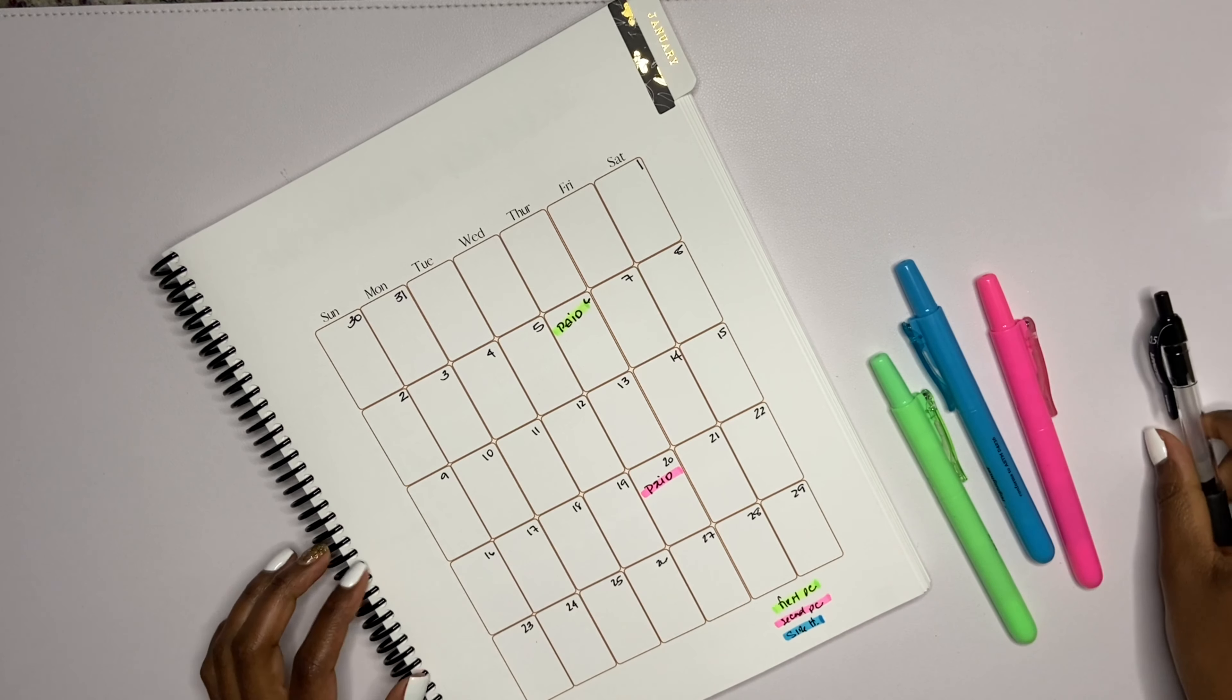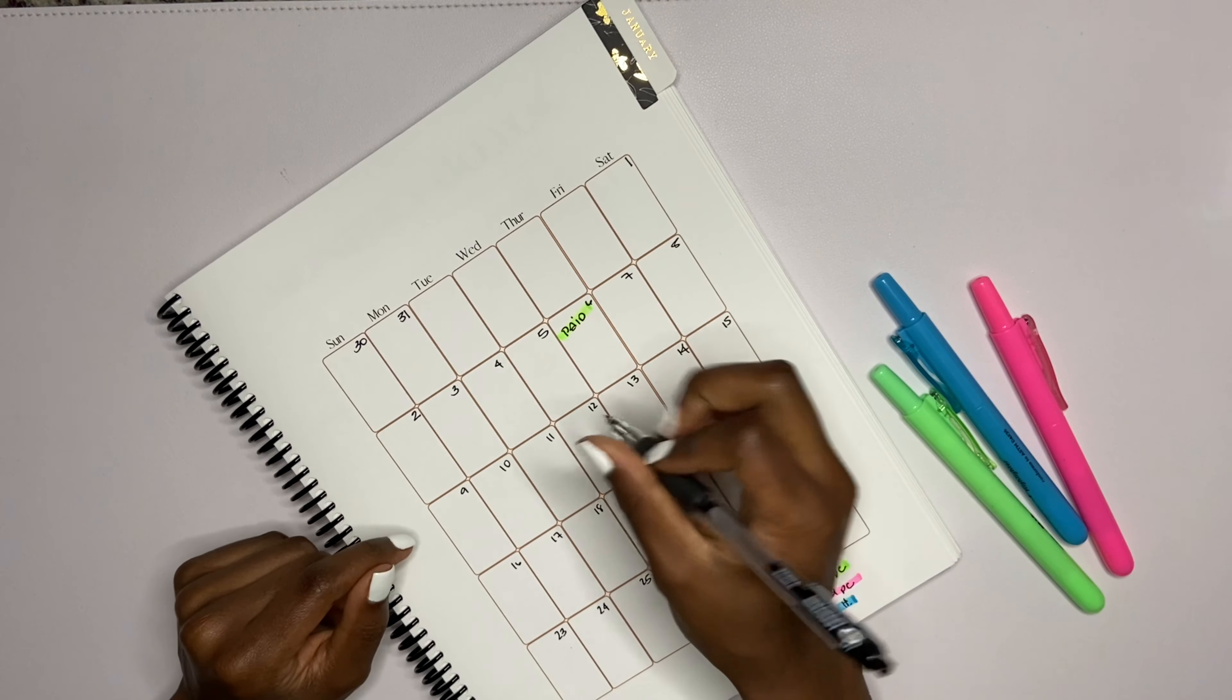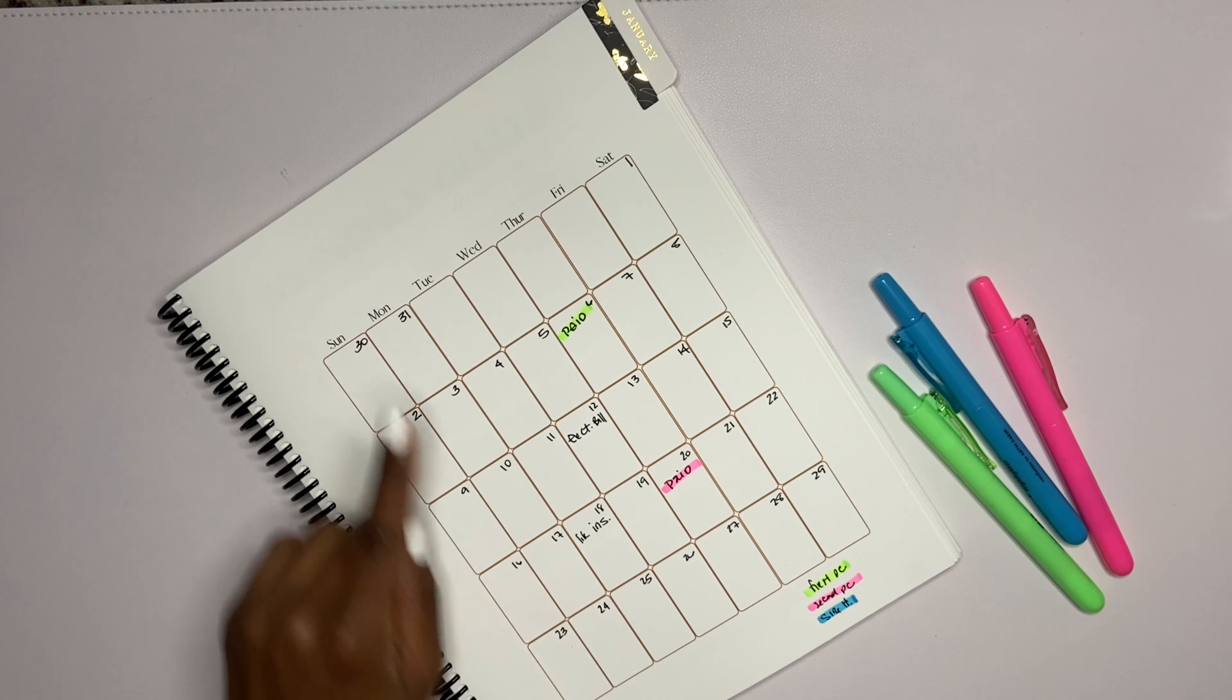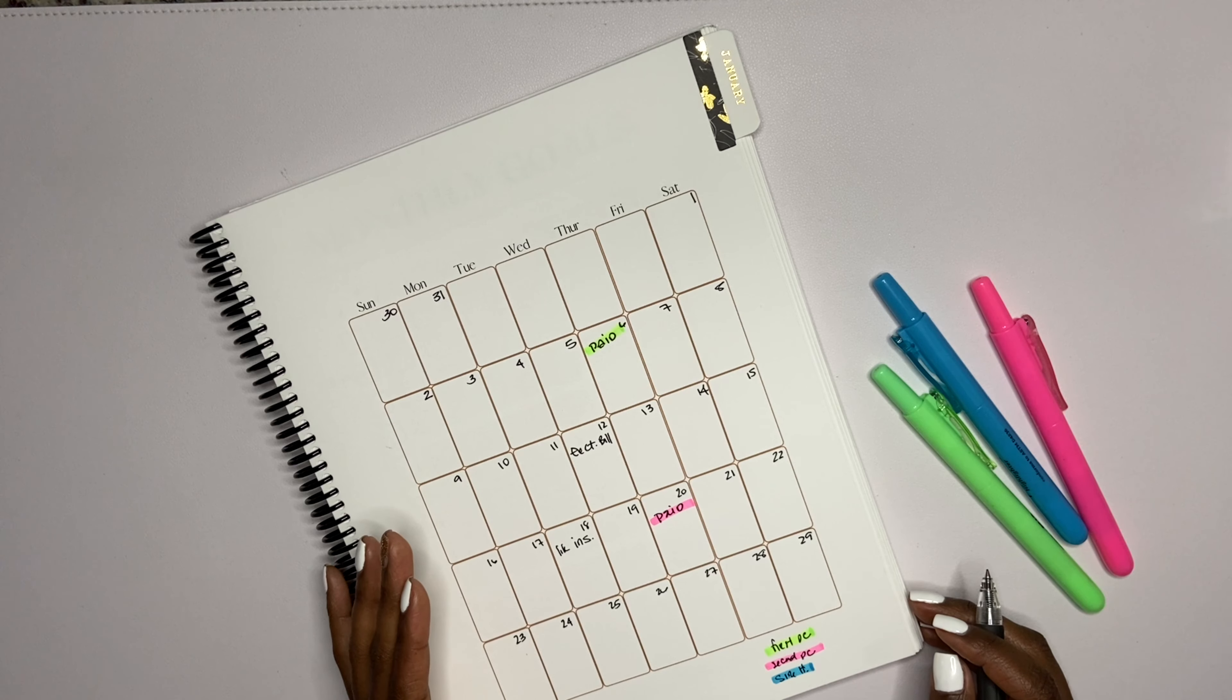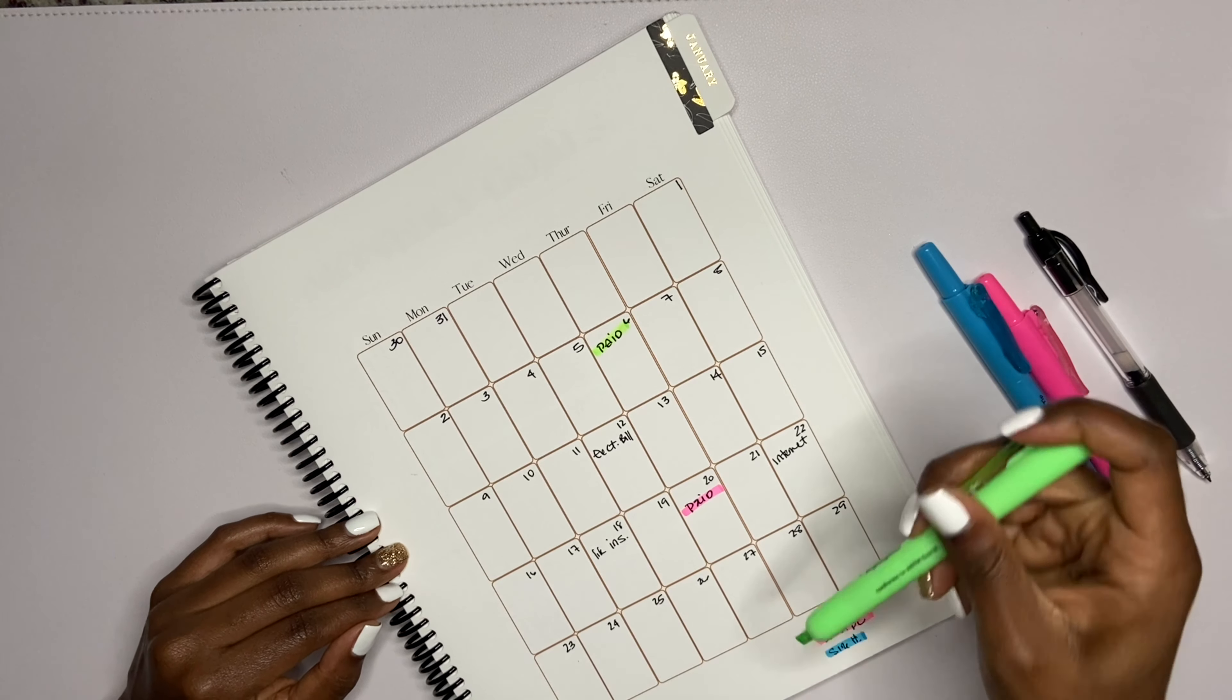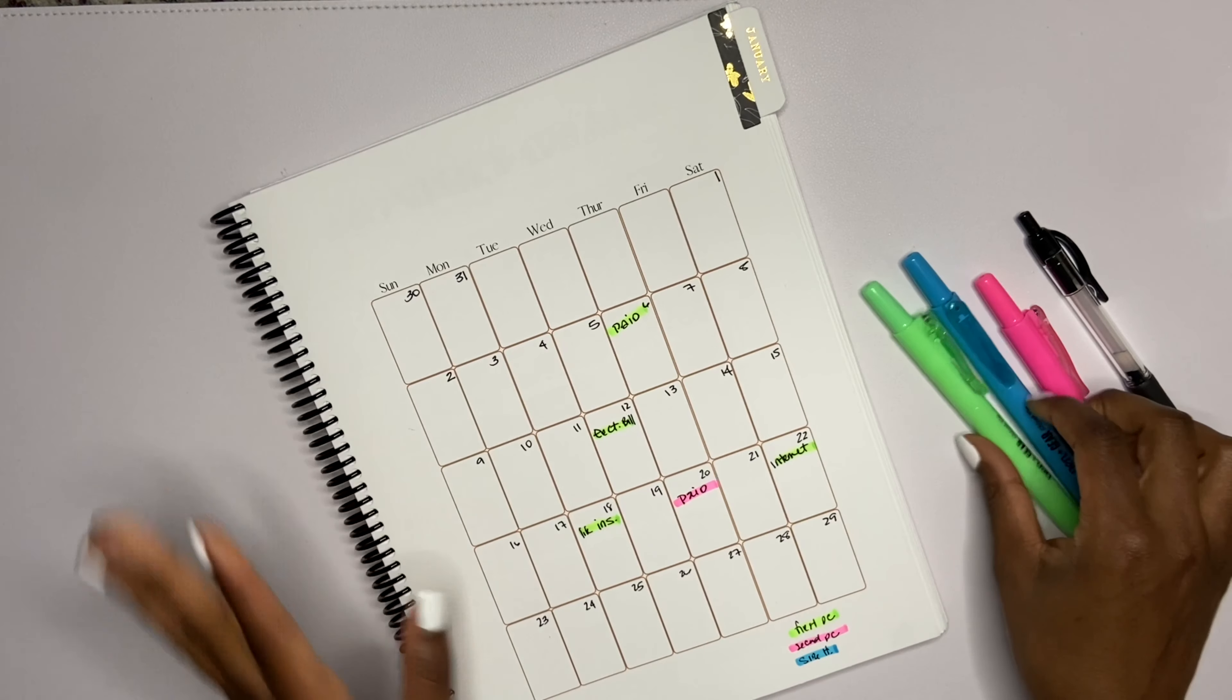My second paycheck is gonna be pink, and then on top of that we'll do blue which will be side hustles. My rent is due on the first. My electricity bill I think is due on the 12th. On the 18th is my life insurance. Rent is obviously due on the first of the next month, so I'm not gonna put that there. My internet bill is on the 22nd.